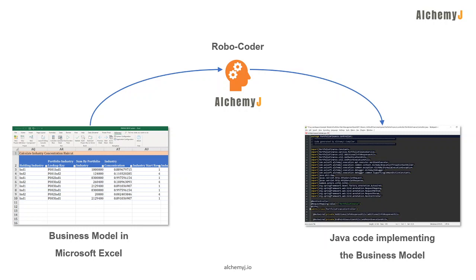Here are some use cases of AlchemyJ. It can implement API for financial models, even a very complex one, as we all know that Excel is the best tool for financial modeling. AlchemyJ could also implement API for CRUD database operations.